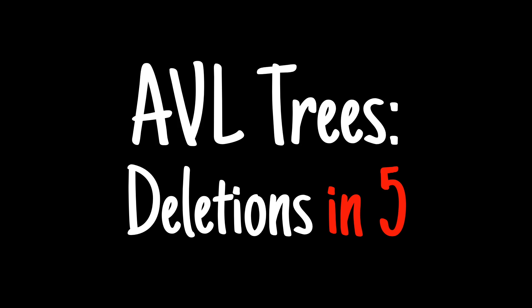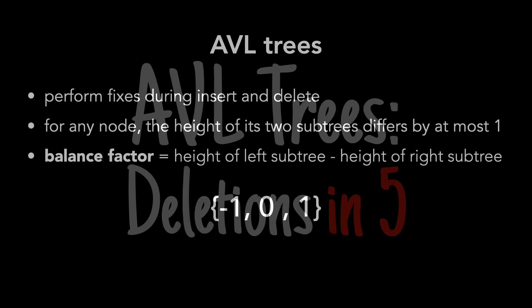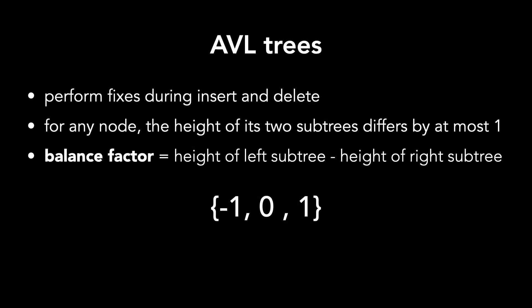Today we'll continue the series on AVL trees and talk about deletions. As a quick reminder, we may need to perform fixes when inserting and deleting nodes from AVL trees. This is because for any node, the height of its two subtrees differs by at most one. This value is called the balance factor and is found by taking the height of the left subtree and subtracting the height of the right subtree.